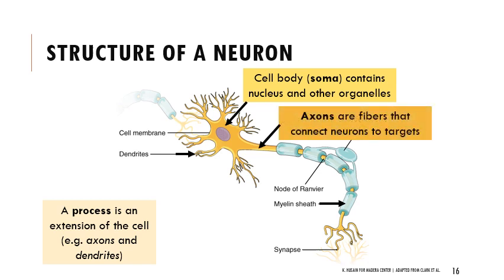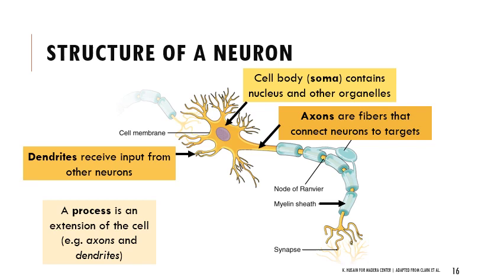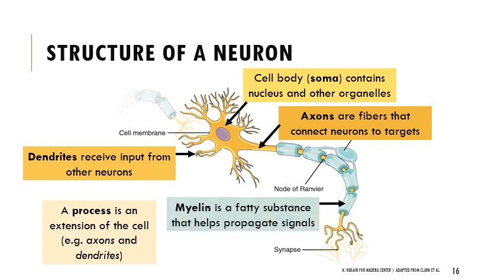Axons are big fibers that connect neurons to their targets. Dendrites are branching structures that stick out from the soma and receive input from other neurons. The end of one neuron's axon connects to the dendrites on the cell body of another neuron. There's fat deposited around the axon - myelin is the name of that fatty substance that helps propagate electrochemical signals. It insulates the axon and leaves gaps between myelin sheets called the nodes of Ranvier.